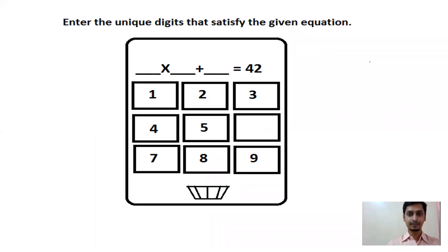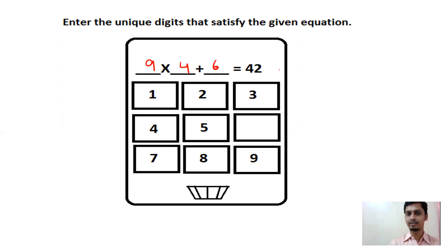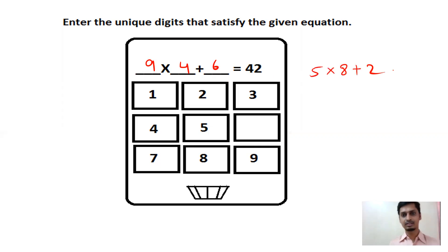Next question: dash × dash + dash = 42. You have many options. For example, 9 × 4 = 36, then 36 + 6 = 42. Or 5 × 8 = 40, then 40 + 2 = 42. You can fill with any valid combination of unique digits that satisfies the equation.